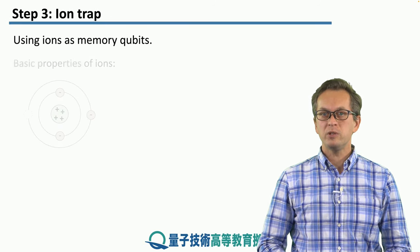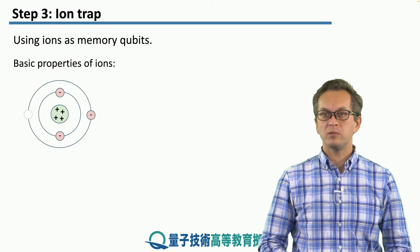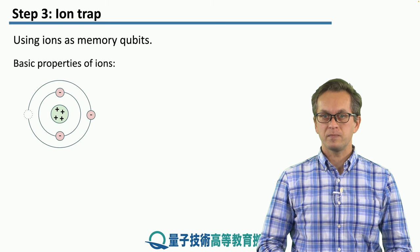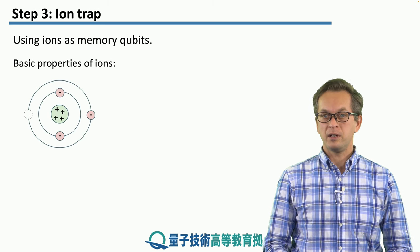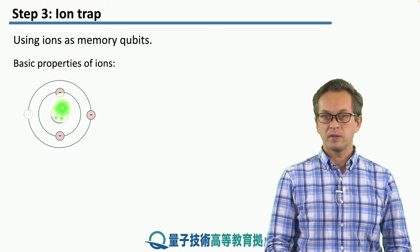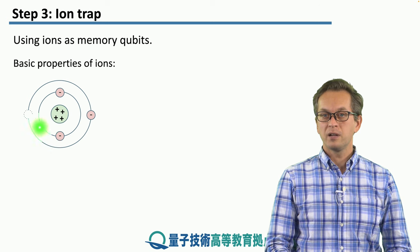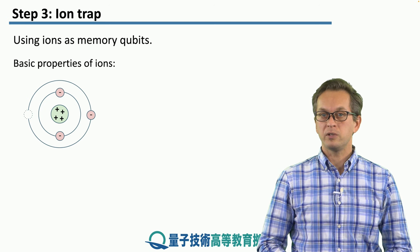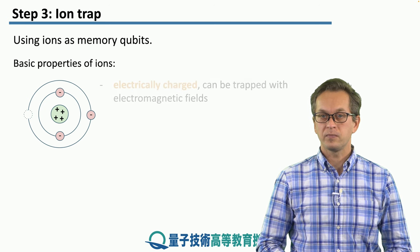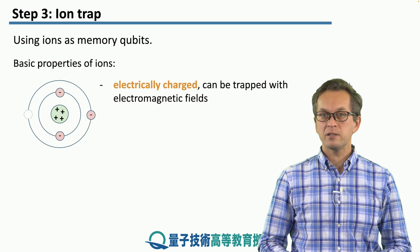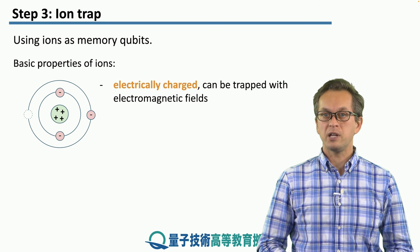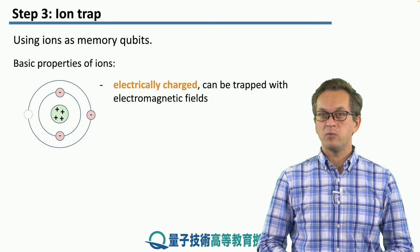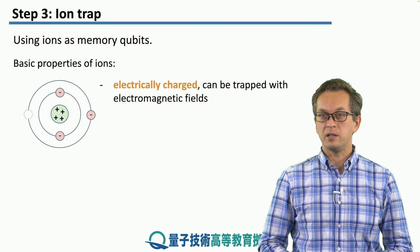So how do we use ions as quantum memories? Imagine that we've got an atom with a positively charged nucleus, and then by knocking out one of the electrons we create a charged particle known as an ion. Ions are electrically charged, therefore they can be trapped with electromagnetic fields.